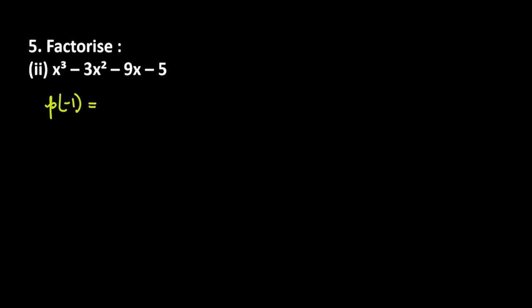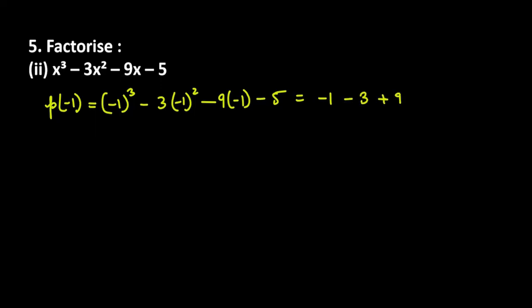Substituting x = minus 1: (minus 1) cube minus 3(minus 1) square minus 9(minus 1) minus 5. First term is minus 1, second term is minus 3, third term is 9, last term is minus 5. Computing: minus 1 minus 3 = minus 4, then minus 4 plus 9 = 4, then 4 minus 5... wait, minus 4 plus 9 = 5, and minus 5 plus 5... actually minus 1 minus 3 = minus 4, plus 9 = 5, minus 5 = 0. So minus 1 is a factor.